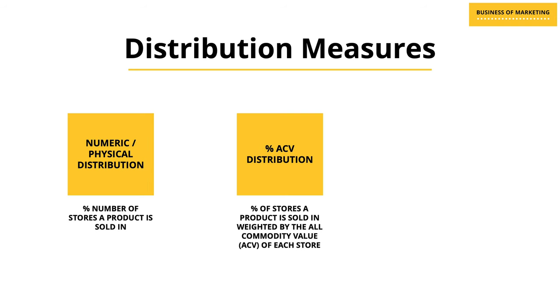So we've seen two important measures of distribution. The first is numeric distribution — the percentage number of stores a product is sold in. The second is percentage ACV distribution — the percentage of stores a product is sold in, weighted by the all commodity value of each store. Now let me add another complication to this conversation.